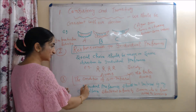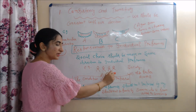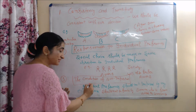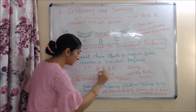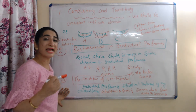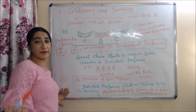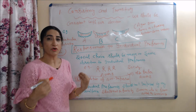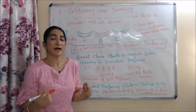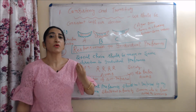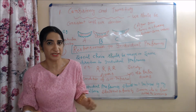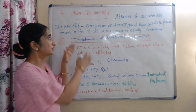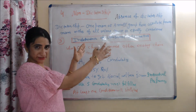The third condition is non-imposition. It means individual preferences should not be imposed by any external factor — specifically, preferences should not be forced by someone living outside the community.